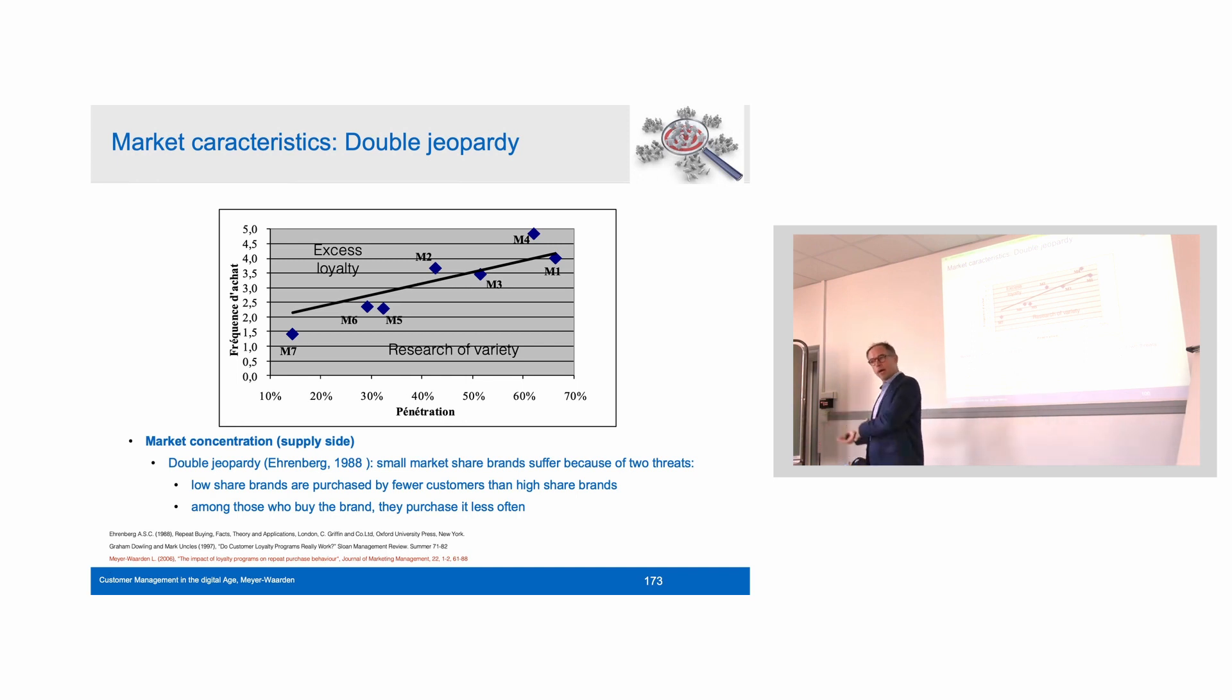So two brands: one Coke with high penetration or a high number of buyers, one Sprite with a low number of buyers. Now if we compare the purchase frequencies, those who buy Coke have higher purchase frequency than those buyers, fewer buyers who buy Sprite, 7up or Canada Dry, who would have a smaller purchase frequency. So 7up and Sprite are hit twice, not only because they have less buyers, but also because these buyers buy less frequently.